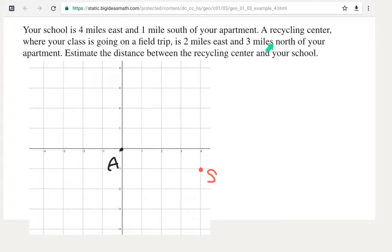And then we've got that the recycling center is two miles east, three miles north - so that's two miles east and three miles north - and we will call that R for the recycling center. What we're supposed to be finding is how far is it from R to S, or what's the length of that segment.